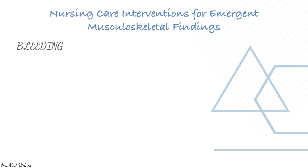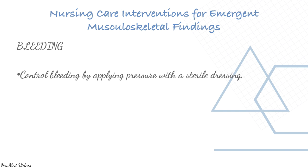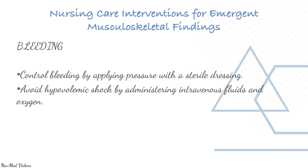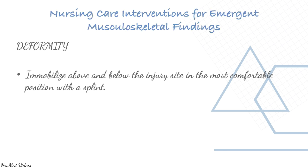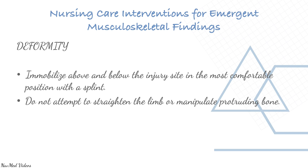For bleeding: control it by applying pressure with a sterile dressing and avoid hypovolemic shock by giving IV fluids and oxygen. For deformity: immobilize above and below the injury site in the most comfortable position with a splint. Do not attempt to straighten the limb or manipulate a protruding bone.